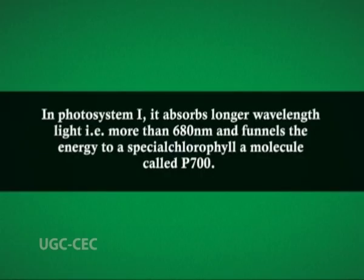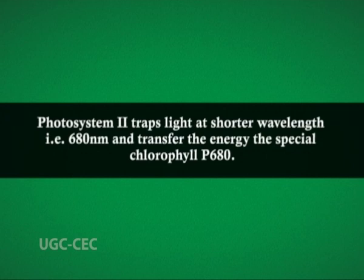Two kinds of antennas are associated with two different photosystems in eukaryotes and cyanobacteria. In Photosystem I, it absorbs longer wavelength light — greater than 680 nm — and funnels the energy to a special chlorophyll A molecule called P700, which absorbs light effectively at 700 nm wavelength. Photosystem II traps light at a shorter wavelength of 680 nm and transfers the energy to a special chlorophyll P680.